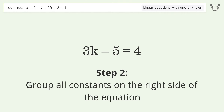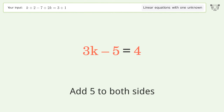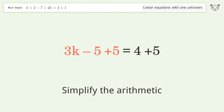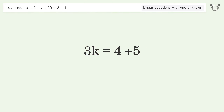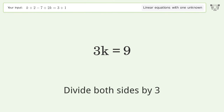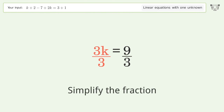Add five to both sides, simplify the arithmetic, and isolate k. Then divide both sides by three and simplify the fraction.